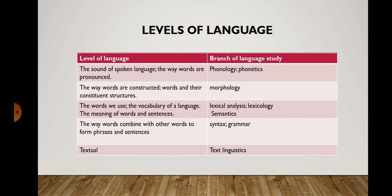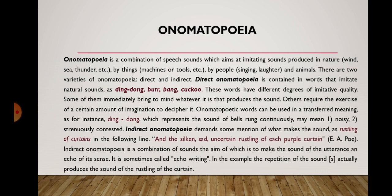In our further lectures we will discuss different stylistic devices and expressive means depending on the level of language. The first and most important level is phonetics, and that is why this lecture is devoted to phonetic stylistic devices and expressive means. Among the phonetic stylistic devices we will cover onomatopoeia, alliteration, rhyme, and rhythm.